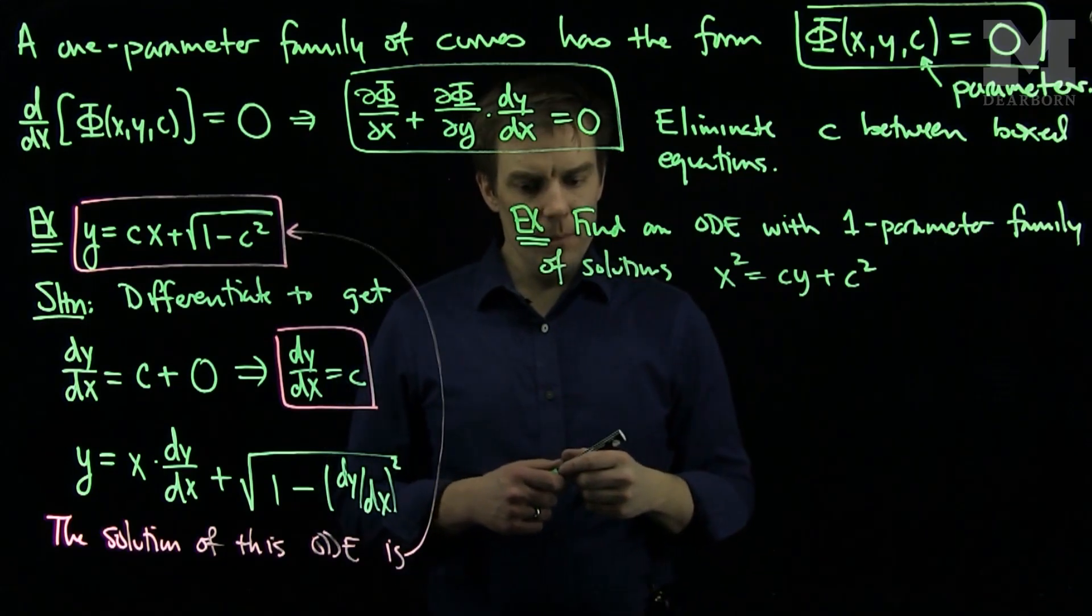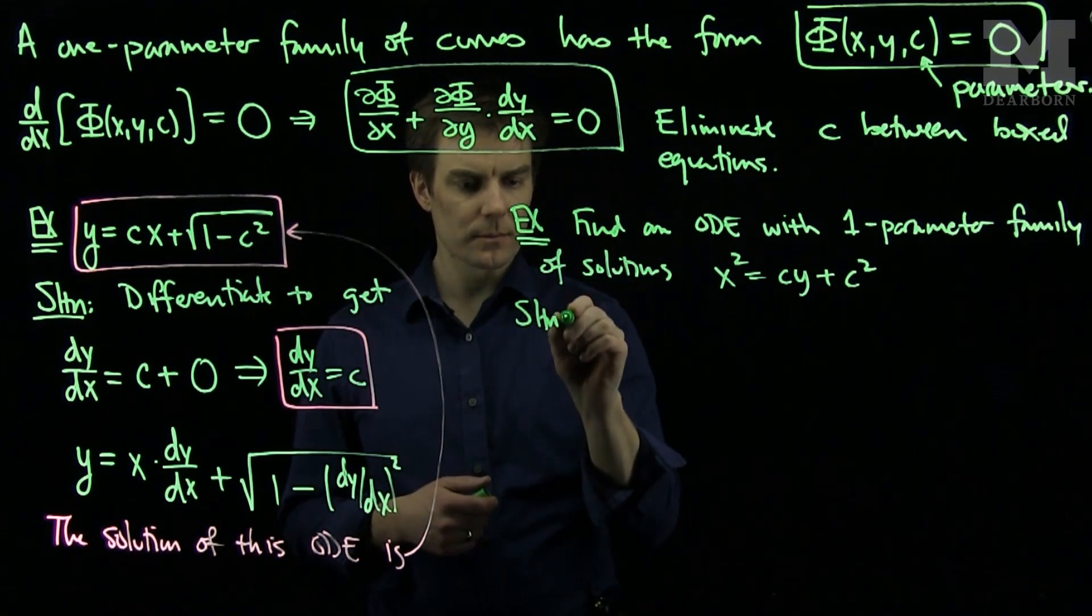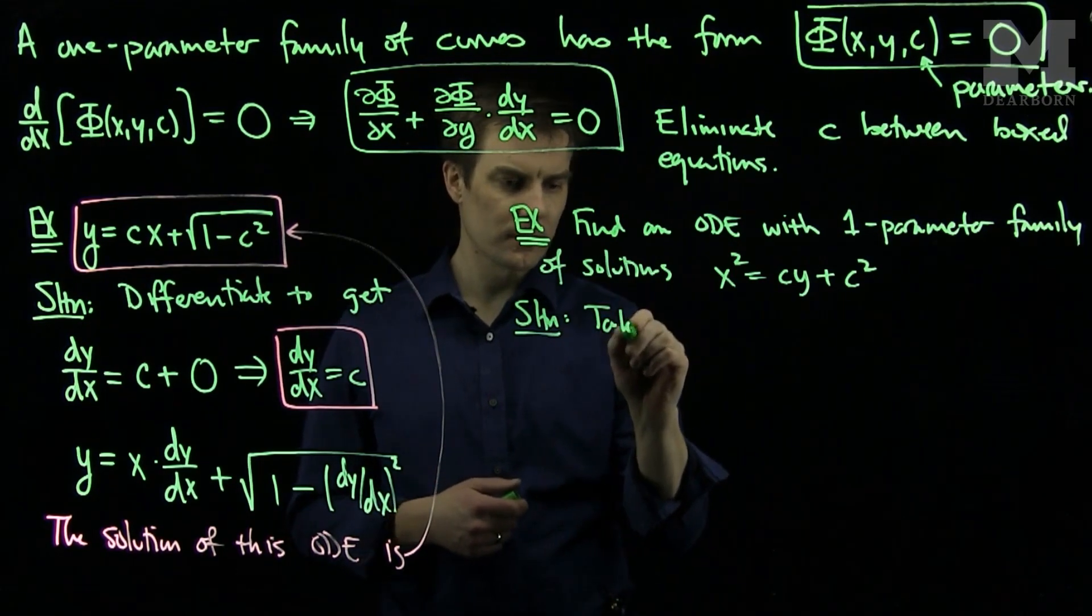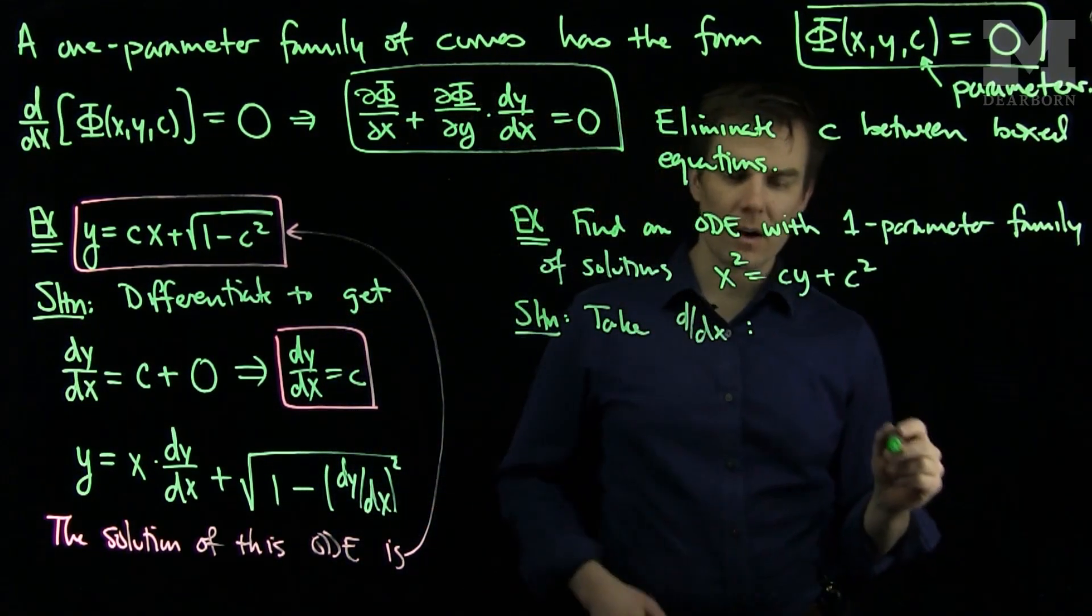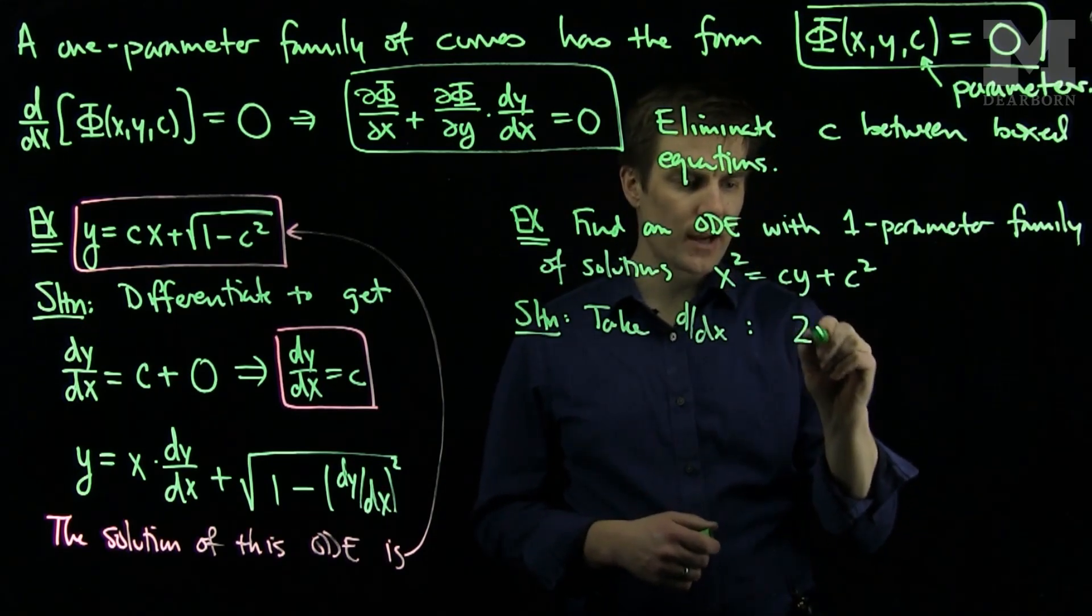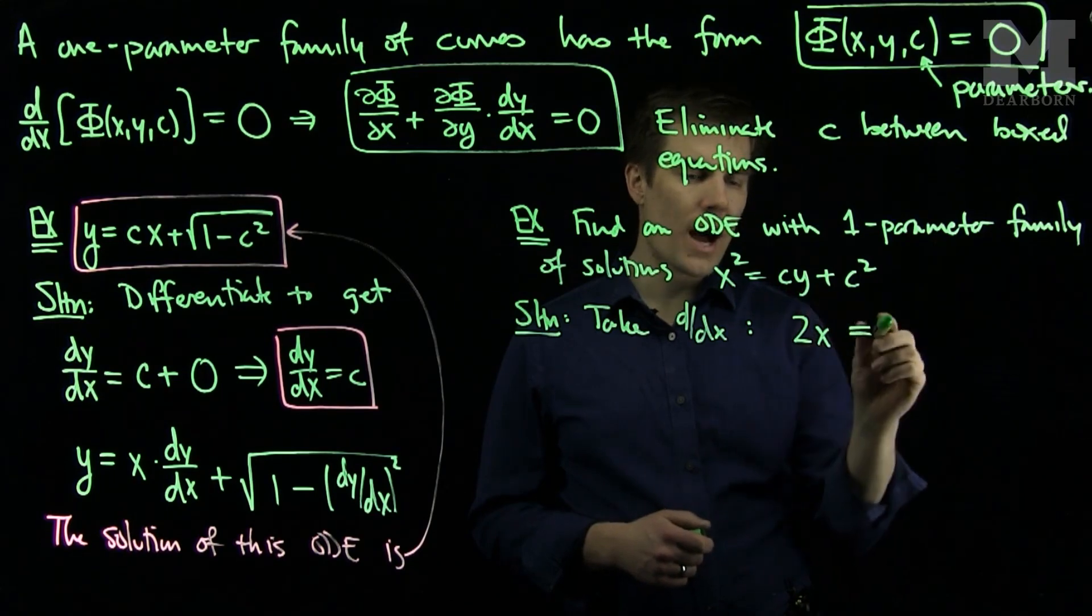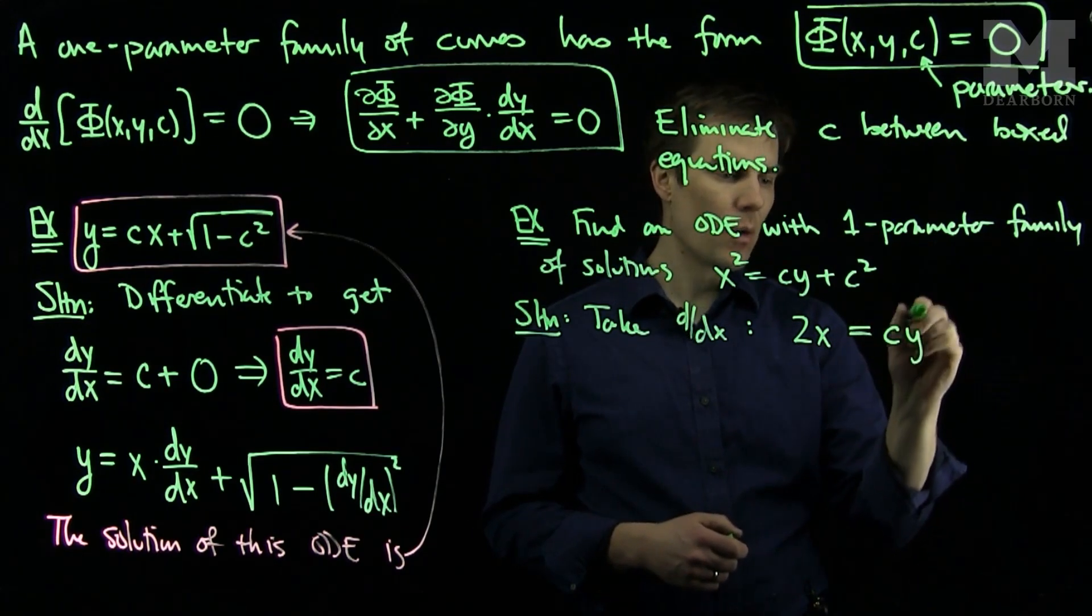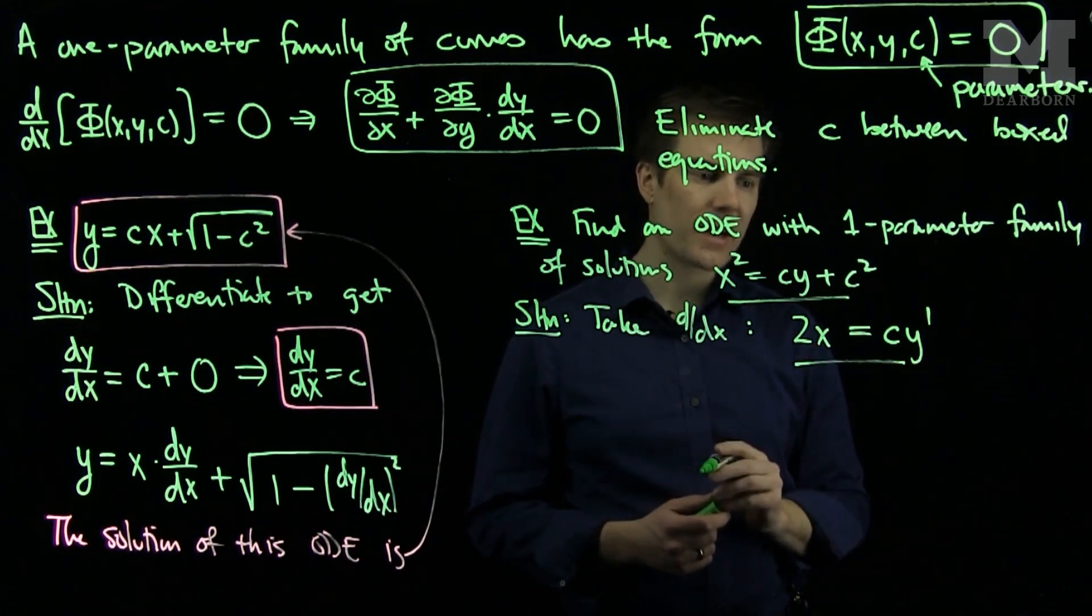We can differentiate this equation. The derivative of x² is 2x, which equals c·y'. And now I have my two equations to eliminate c.